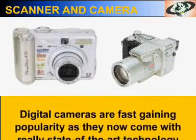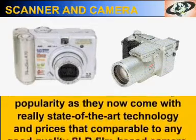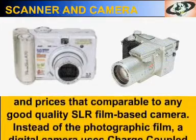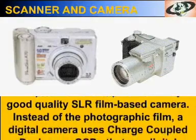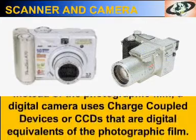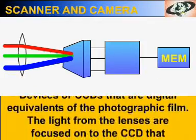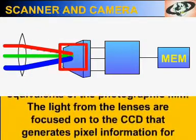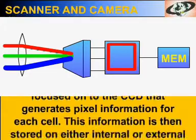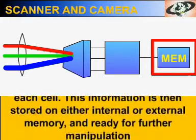Digital cameras are fast gaining popularity with state-of-the-art technology and prices comparable to any good quality SLR film-based camera. Instead of photographic film, a digital camera uses charge-coupled devices or CCDs, which are the digital equivalent of photographic film. The light from the lens is focused onto the CCD that generates pixel information. This information is then stored on either internal or external memory and is ready for further manipulation.